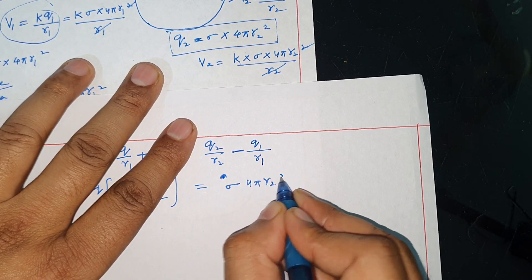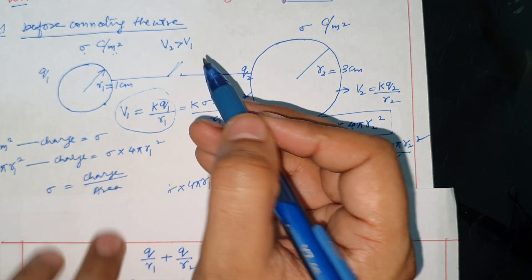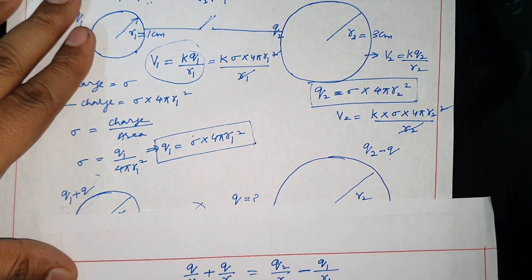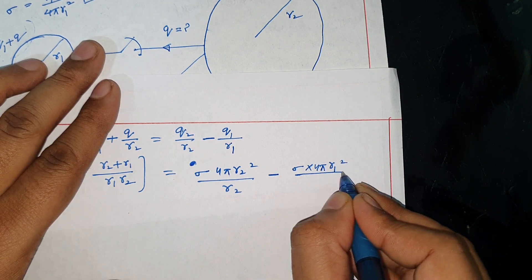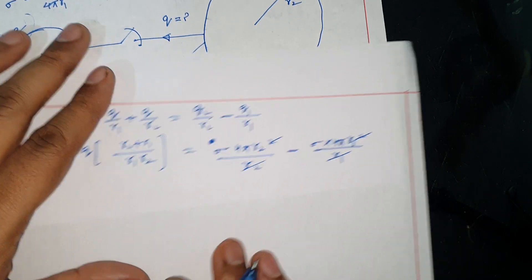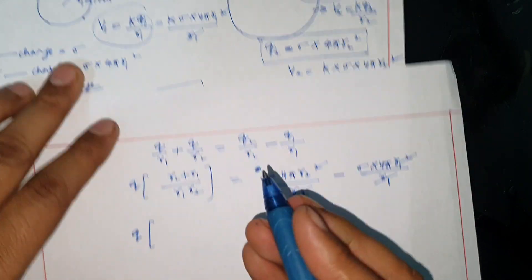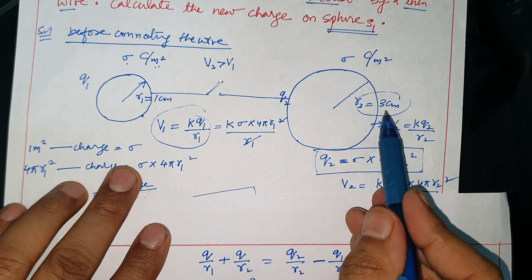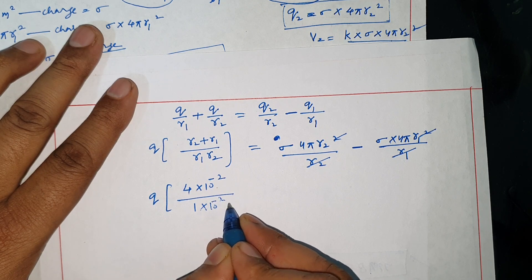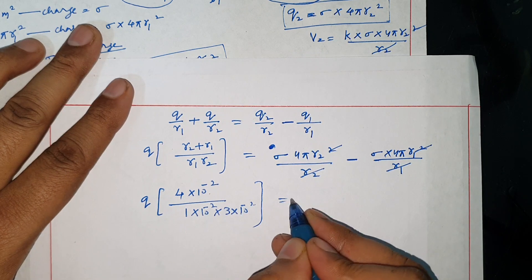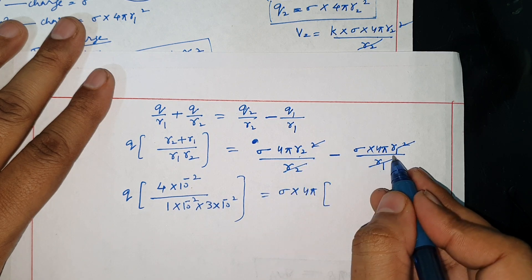Substituting Q2 as sigma × 4πR2² and Q1 as sigma × 4πR1², we take 4π common. Converting radii to meters: r1 = 1 × 10⁻² and r2 = 3 × 10⁻². The sigma value is 2/π × 10⁻⁹.